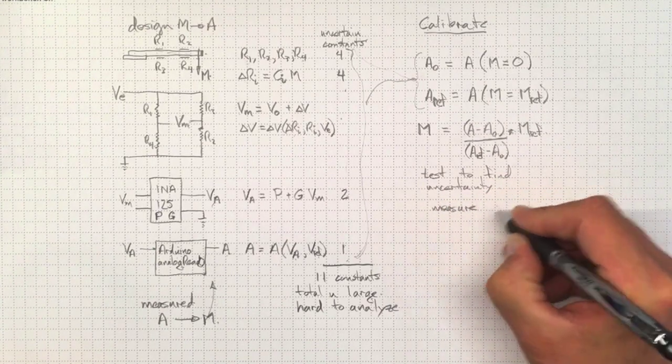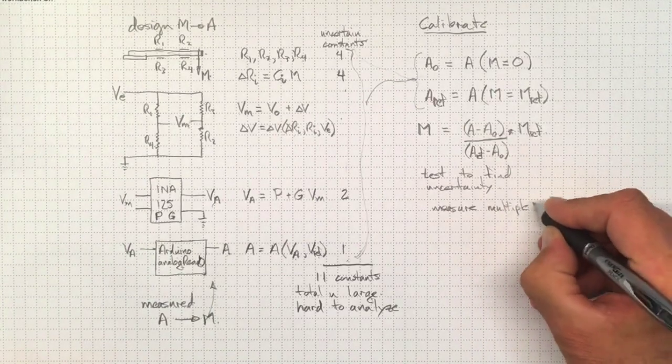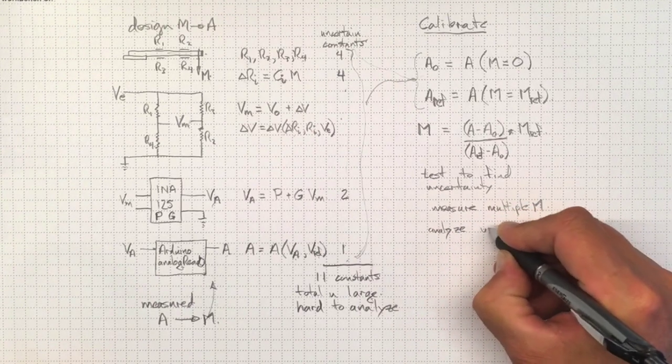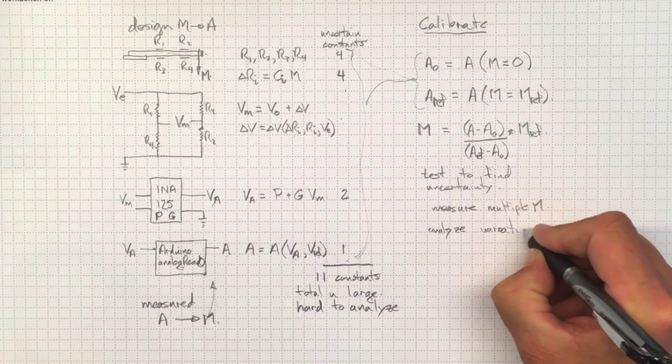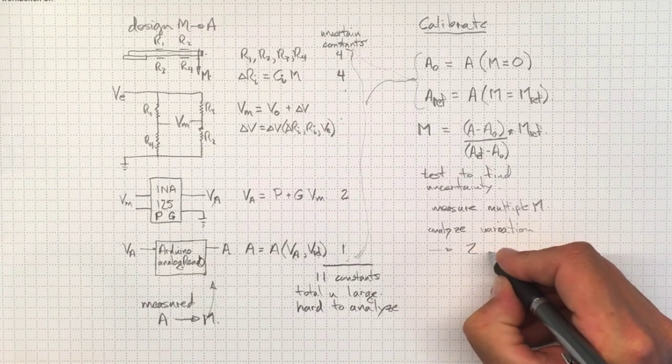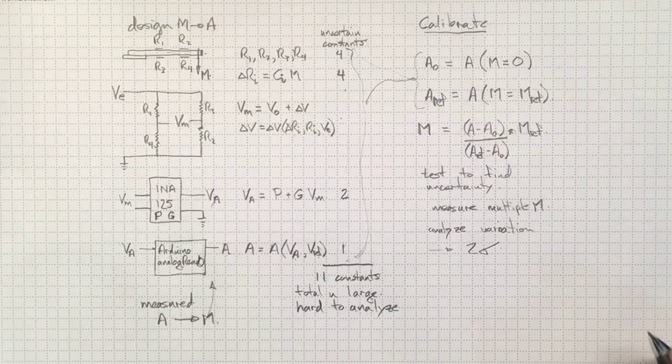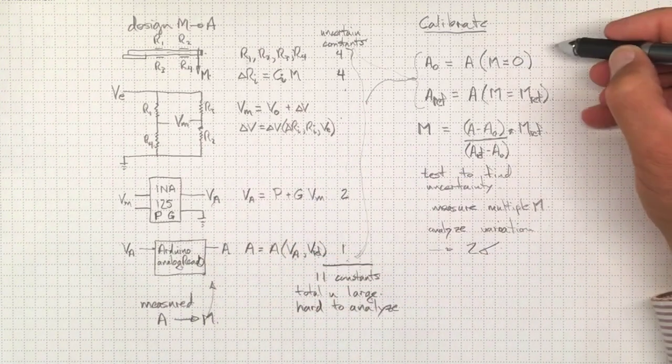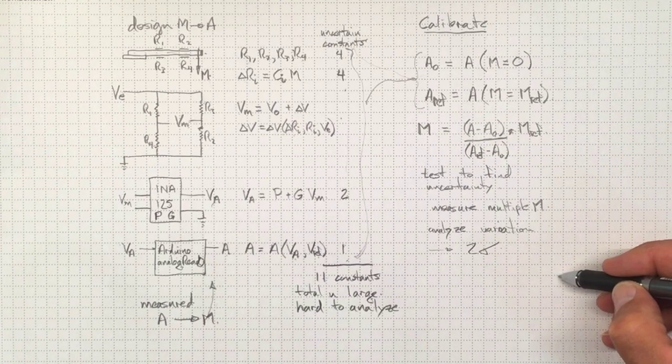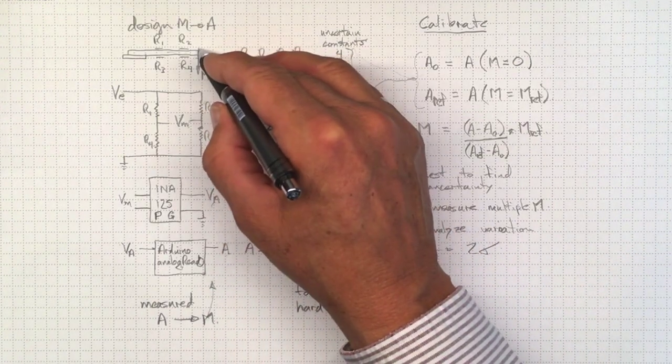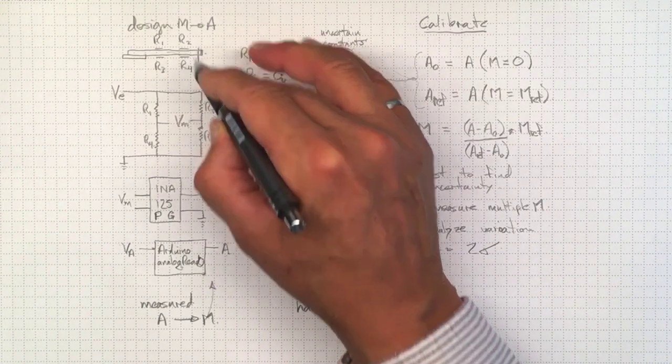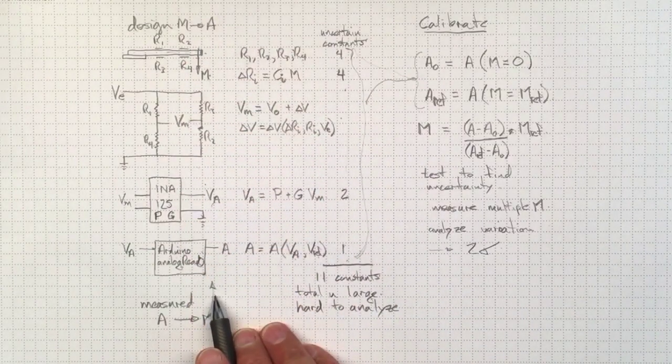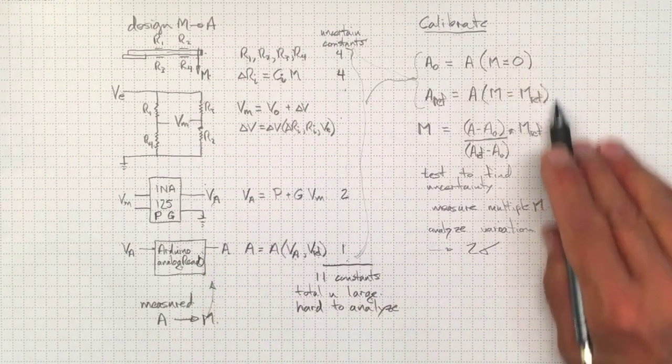And that would simply be a matter of measuring multiple values of mass and analyze the variation. And typically we'd be looking for two standard deviations to give us an indication of the 95% uncertainty. Understanding this process is important to design the measurement system. Doing this calibration process is way more effective in reducing the uncertainty because it doesn't require that you know the exact manufacturing tolerances on all of the devices in your system. So, by all means, design from a physical understanding of how the system's working, but measure based on a calibration.